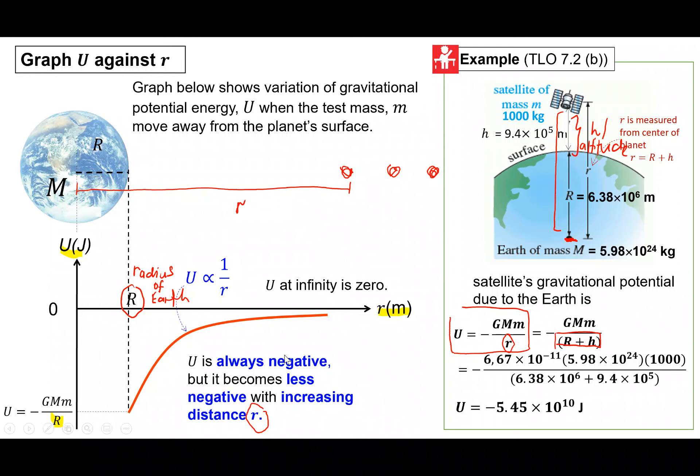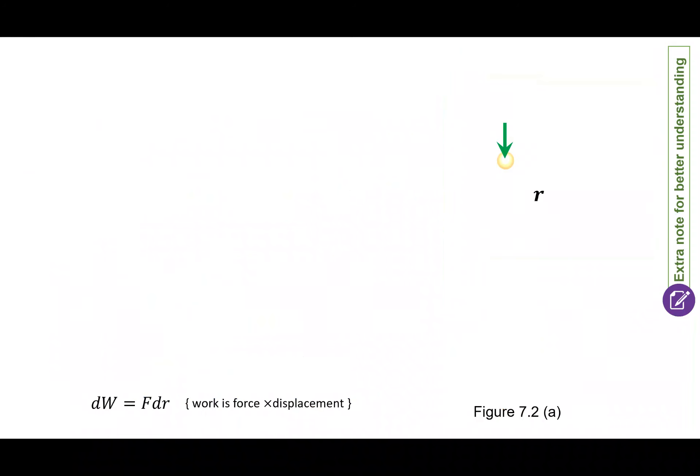So ni jangan silap lah. You kena differentiate between small r and the capital R. And then barulah you plug in all the values. Then make sure semua unit mestilah dalam SI unit. So convert kepada meter. And then you end up you punya answer dengan negatif 5.45 darab 10 kuasa 10 dan negatif ini adalah compulsory. Tak ada negatif, terus salah lah.